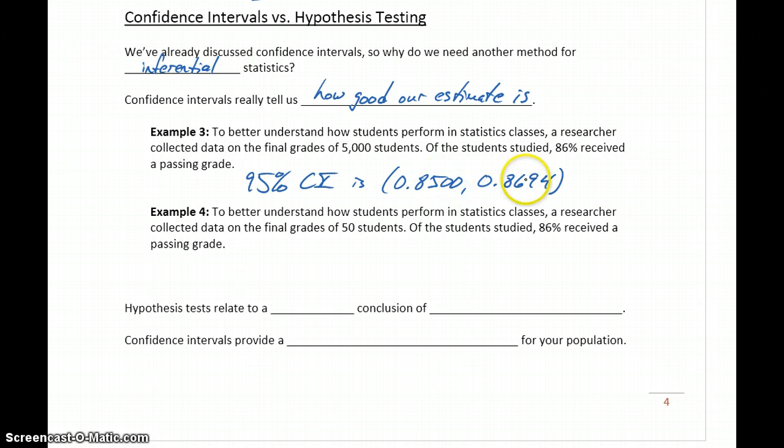That's a relatively small range. We're 95% confident that the actual population proportion is captured in that interval, somewhere between a little over 85% and a little under 87%. We have a very small range of likely values due to that very large sample size.